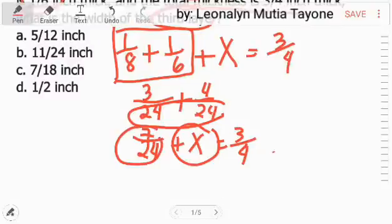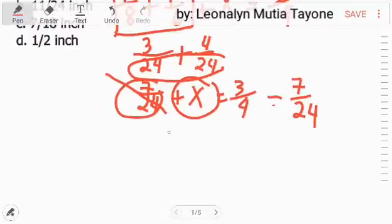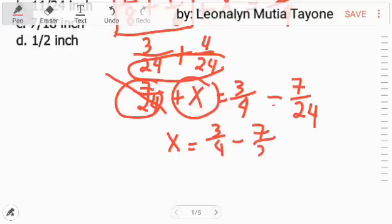To isolate x, transfer this to the other side. Since it's adding here, it becomes subtraction on the other side. So, 7 over 24. 3 fourth minus 7 over 24. 7 over 24 cancels out on this side. So what remains is x equals 3 fourth minus 7 over 24.